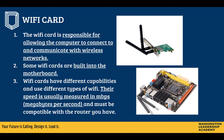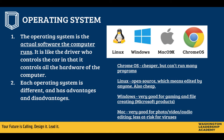The operating system is the actual software the computer runs. Think of it like a car — the hardware is all the physical parts, but you need a person behind the wheel controlling what the car can do. There are four common operating systems. Chrome OS is cheaper and can't run many programs, but works well for basic internet and document editing. Linux is open source, meaning anyone can edit it — like a Wikipedia of what computers can do — and is also cheap.